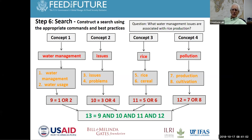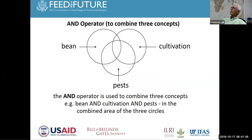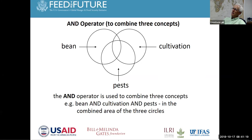Everyone knows about Boolean operators. The AND operator combines terms — for example, bean AND cultivation AND pests — and that overlapping area in the middle combines all three terms. This is a way of making your search more precise. The combined area of the three circles requires all three terms to appear.